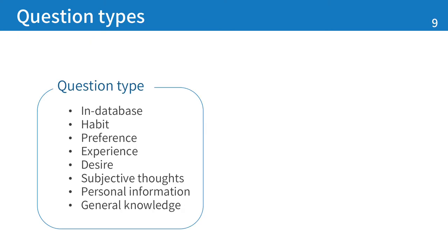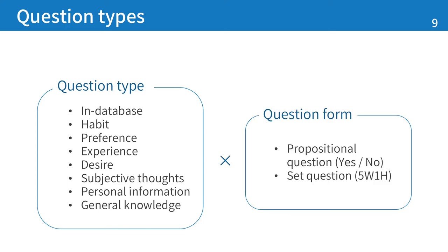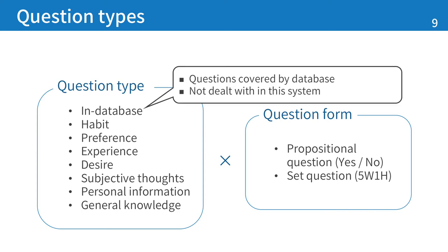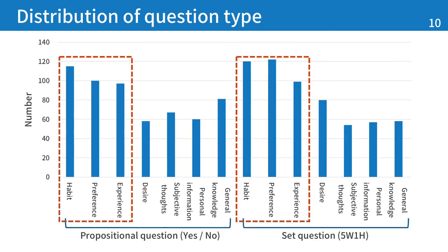We defined 8 question types: in-database, habit, preference, experience, desire, subjective thoughts, personal information, and general knowledge. Additionally, we consider the question form: yes-no question or WH-question. Among these question types, 'in-database' is different from the others — in-database questions are questions that should be covered by the database, so we don't deal with this type in the system. This graph shows the distribution of question types. The most important three types are habit, preference, and experience, as many questions of these types appear in the corpus.